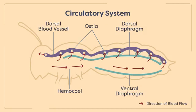Hemolymph movement into major appendages, such as the antennae, wings and legs, is managed by additional pulsatile pumps located at the base of each appendage. There is a regular pattern of hemolymph flow between body segments and appendages thanks to impressive coordination between the dorsal vessel, accessory pumps and diaphragms. The insect nervous system helps to mediate such coordination, and we'll learn more about the nervous system in the next module.